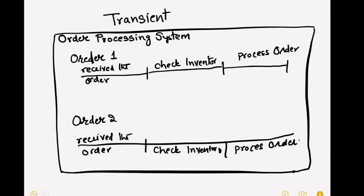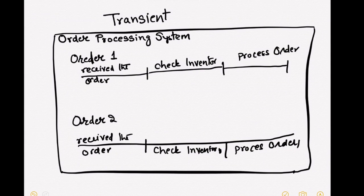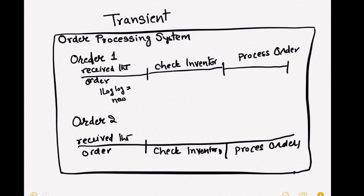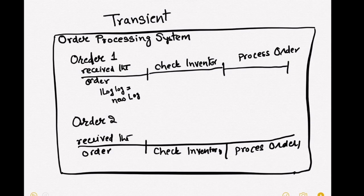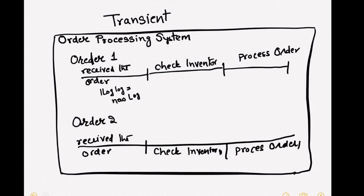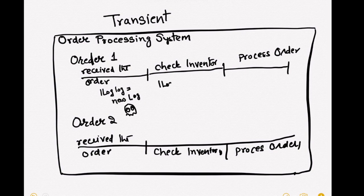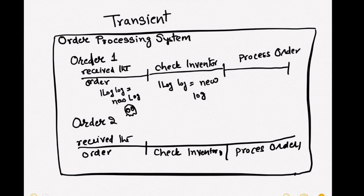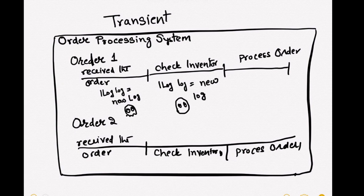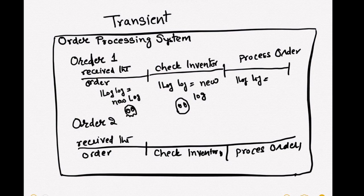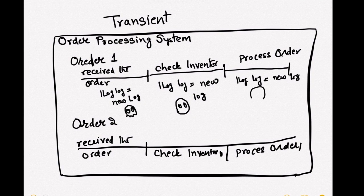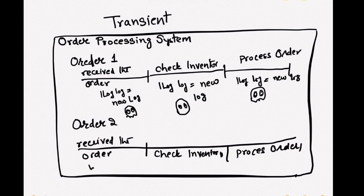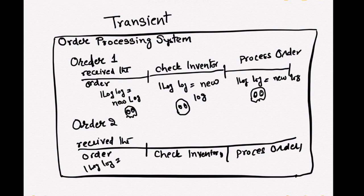And suppose we are logging each step. Order one has three steps and each step is being logged. So when we use transient lifetime, ASP.NET Core gives a new object or new service for every entry. So behind the scenes, if we are creating a log from the container, it is doing new log for each request.